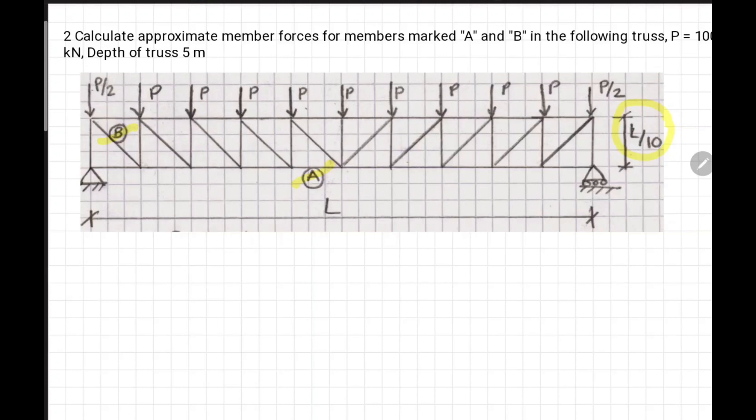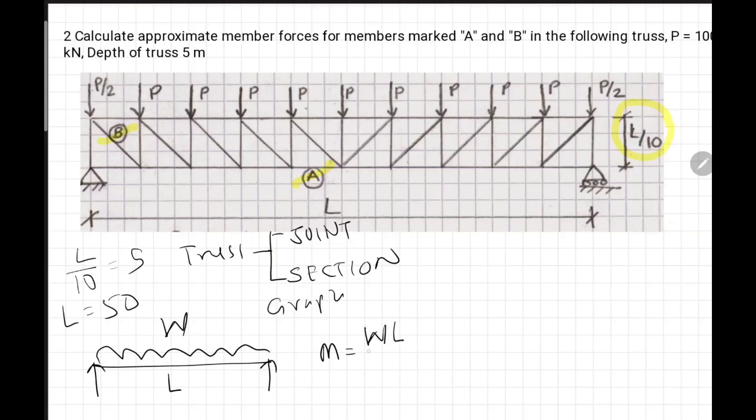Once we know L over 10 is 5, we can calculate span 50 meters. Truss we can solve using joint method, section method, and the third method we call graphical statics. But this problem asks for approximate member forces calculation. So, truss can be converted into an equivalent beam. If we know the bending moment diagram, which is if total load is W, span L, moment is WL over 8.